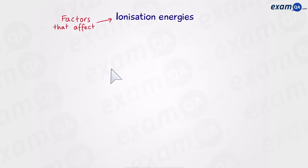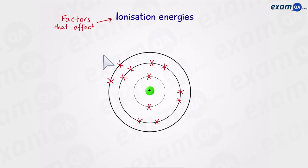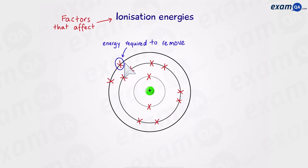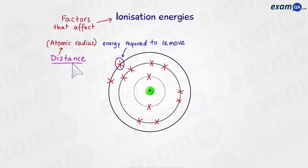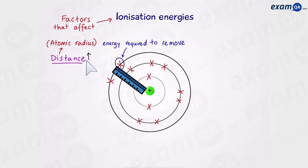Before we get into that, let's quickly talk about the factors that affect ionization energy. In an atom, all the electrons are attracted to the positively charged nucleus. One factor is distance, or in other words, atomic radius — the distance from the nucleus to the outermost electron. If distance increases, meaning an electron is further away from the nucleus, it will be easier to remove. This means we won't need as much energy, so the ionization energy will be lower.